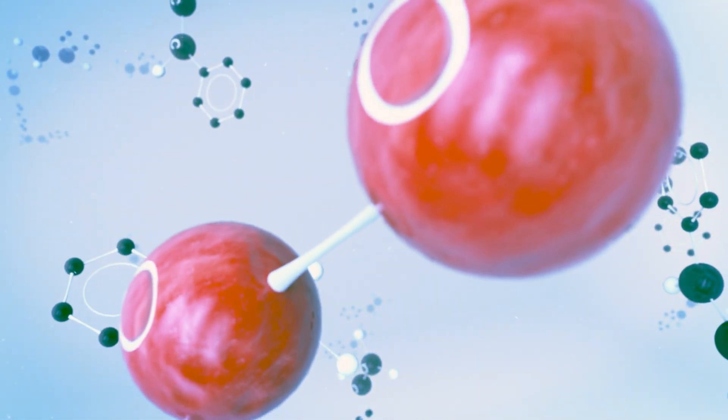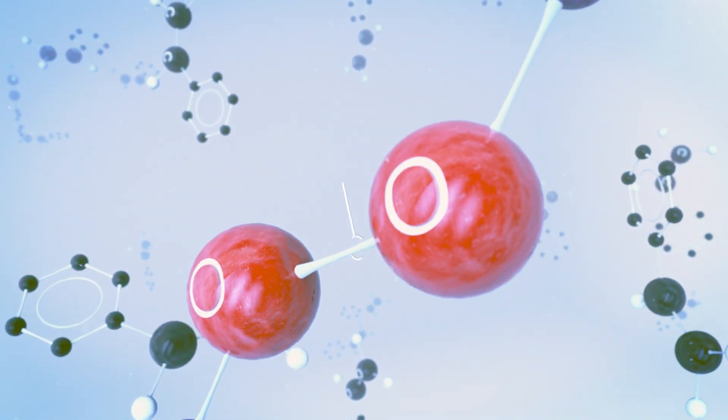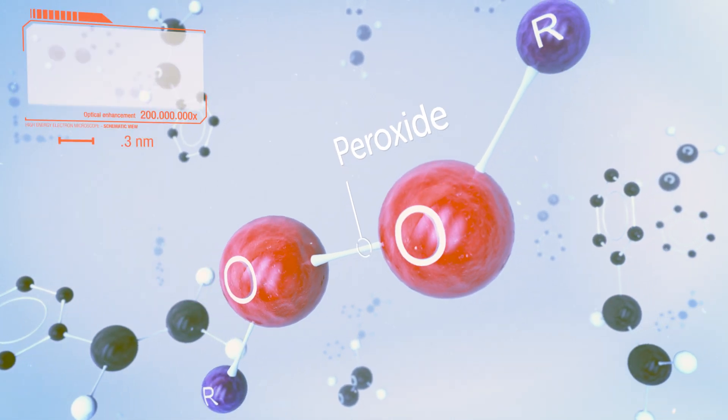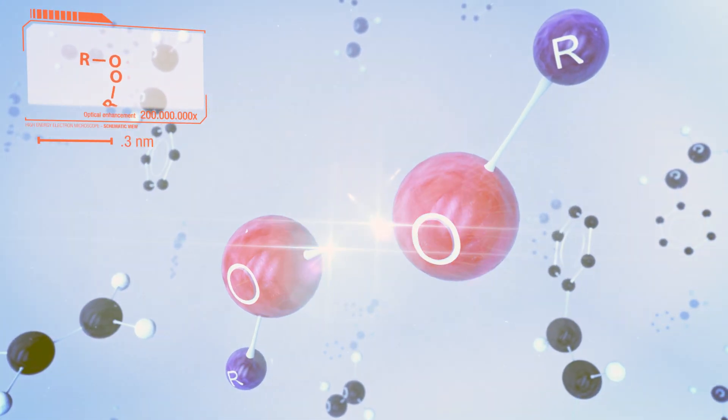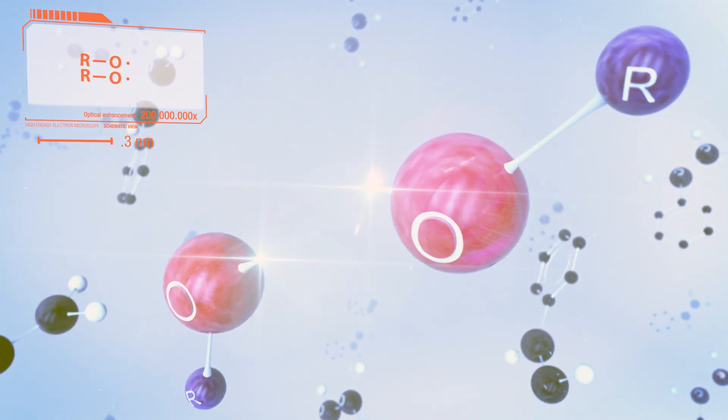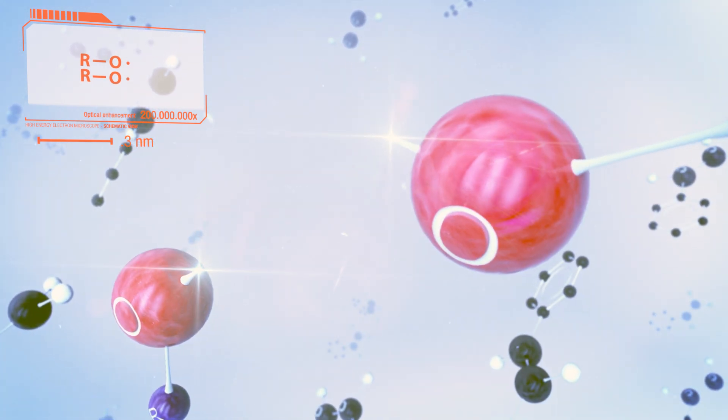The curing process starts with the addition of an organic peroxide to the polyester resin. When heated or coming into contact with a metal accelerator, the organic peroxide breaks into two parts called radicals.